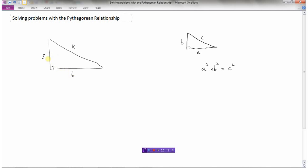So in this question here, I know the two short sides and I'm asked to find the hypotenuse. We should get used to just writing down the formula. a squared plus b squared equals c squared.